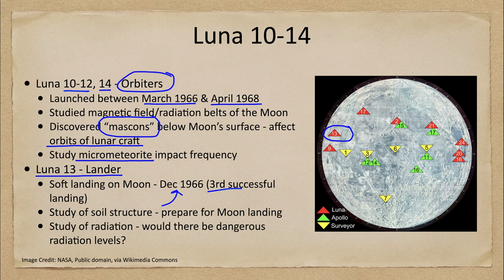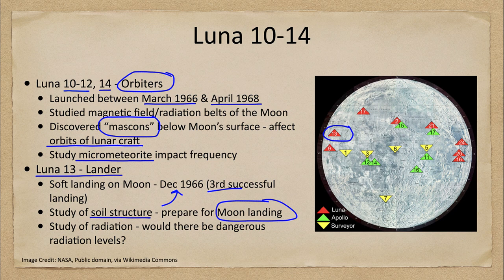Landing on the moon — specifically a soft landing — is important because we wanted to study the soil of the moon in preparation for landings by humans. We wanted to know how thick the soil was and how far into the soil a craft would penetrate. That was something not known for sure until we actually had craft soft land on the surface. And as you can see, we're getting very close to human landings at this point, just a few years away.